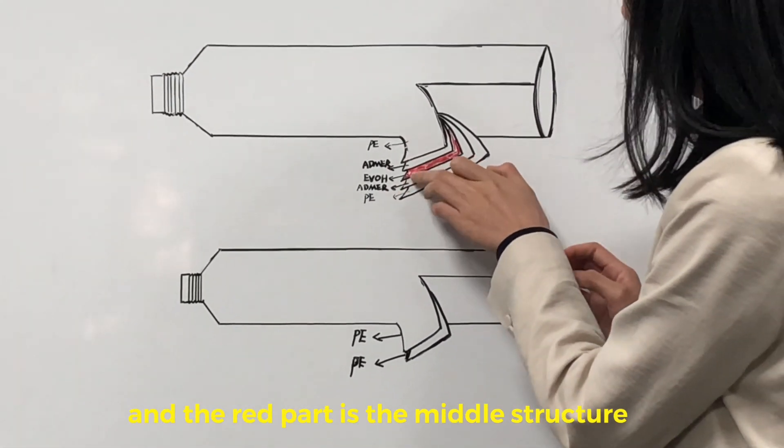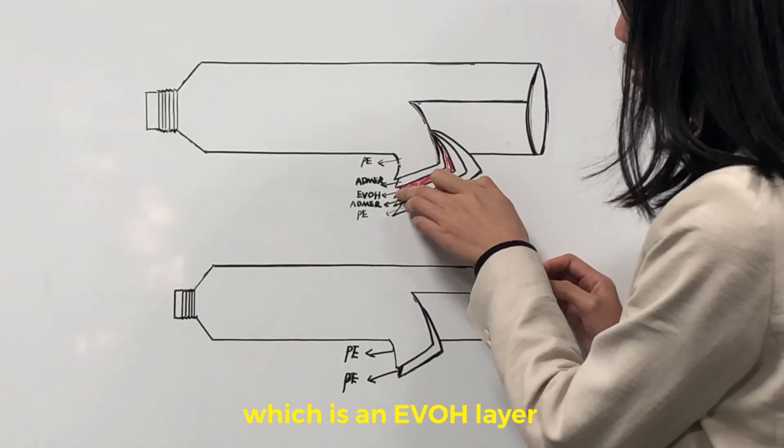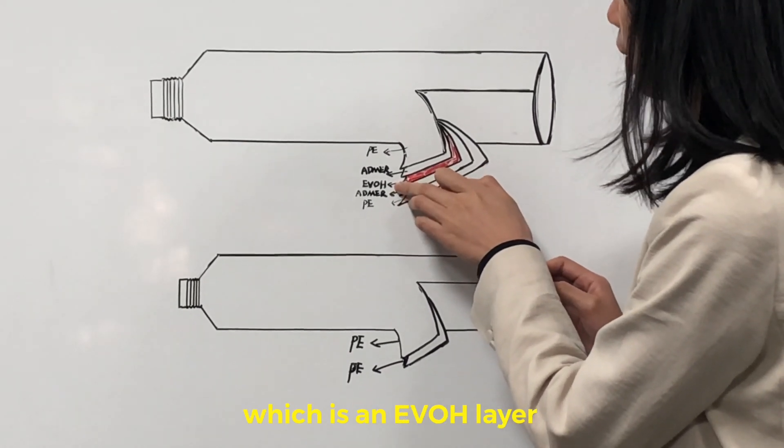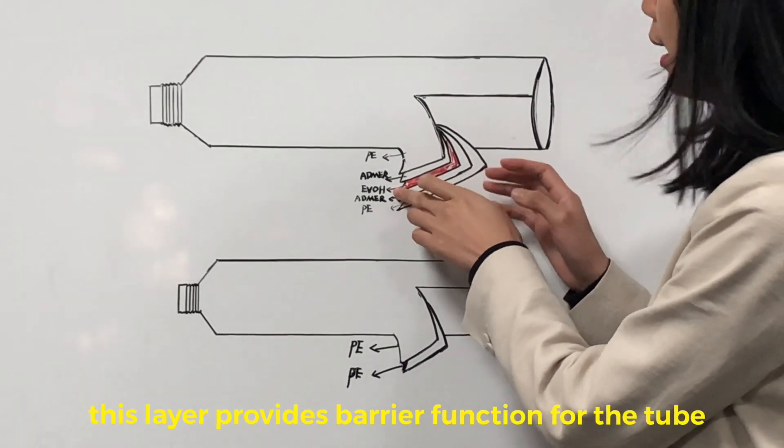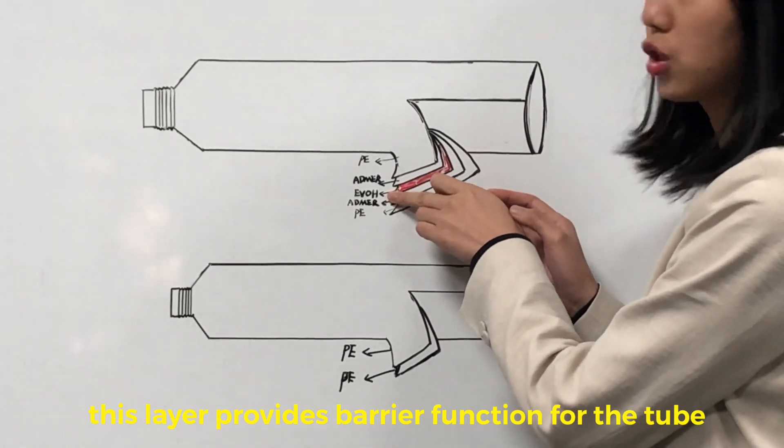And the red part is the middle structure which is an EVOH layer. This layer provides barrier function for the tube.